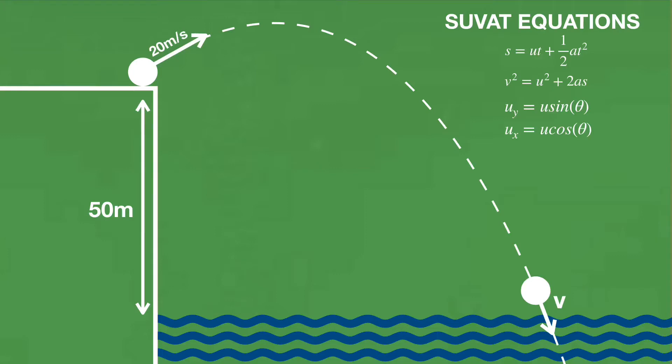Take this example. We have some projectile being launched off a 50 meter cliff into the water below at a velocity of 20 meters per second, 30 degrees over the horizontal. Find the velocity of the projectile the instant before impact with the water.